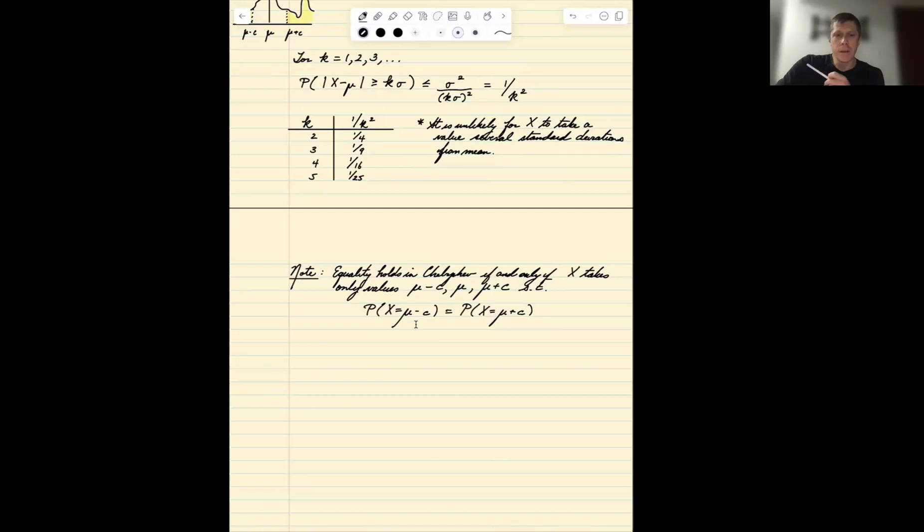Okay, so those are Markov's and Chebyshev's inequality. And as we'll see in the next example, we'll talk about how this actually can and is used commonly in estimating success probabilities, particularly in polling.